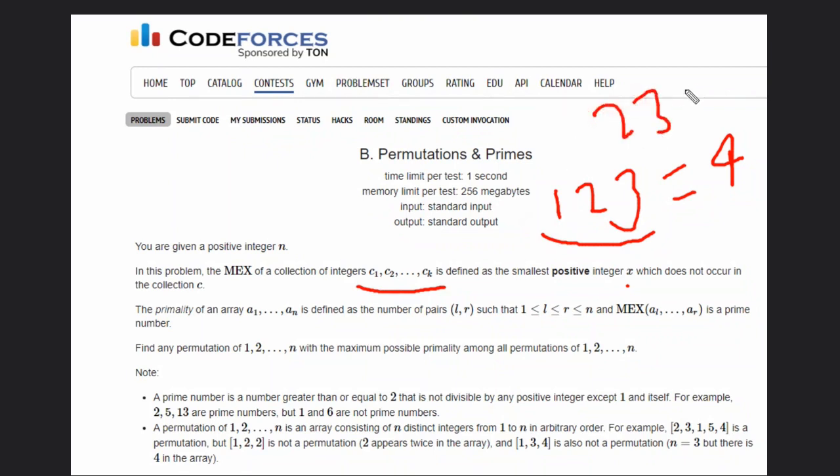The smallest number which is not included in this array. So suppose if we have 2 and 3, then MEX will be 1. Another thing is that we have to check the primality. Primality means that this smallest number must be prime, so then our subsequence will be primal.